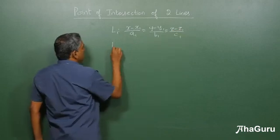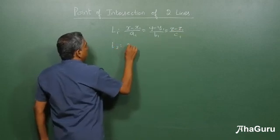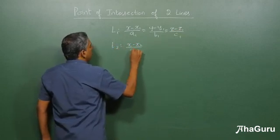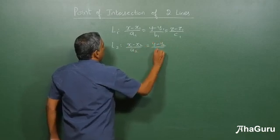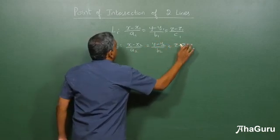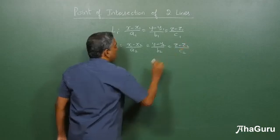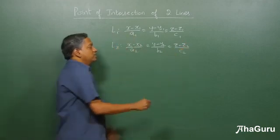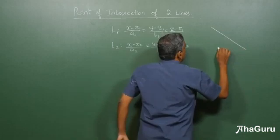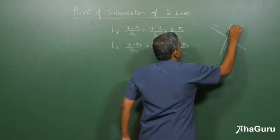z minus z1 by c1 and L2 is given by x minus x2 by a2. Now so these two lines, let's say this is L1 and L2.